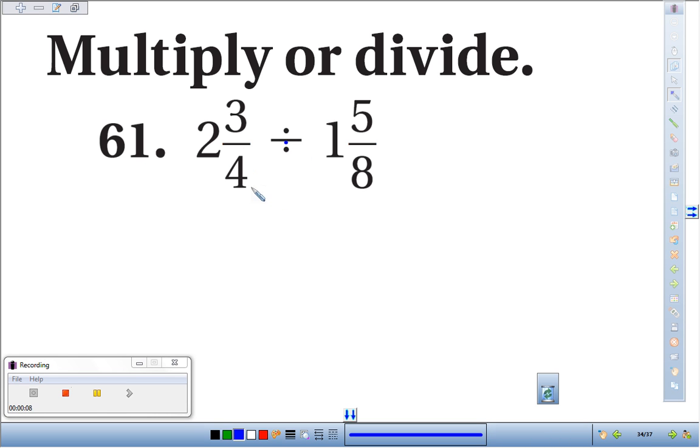In order to divide, we need to convert these to improper fractions first. To do that, we'll take 2 times 4, which is 8, add the 3, which is 11. So you've got 11 fourths divided by 1 times 8 is 8, plus 5 makes 13 eighths.